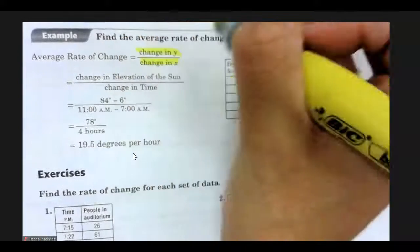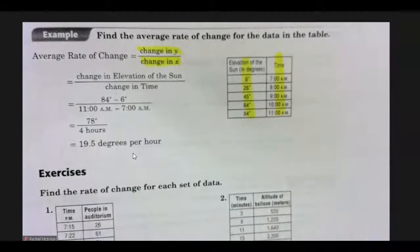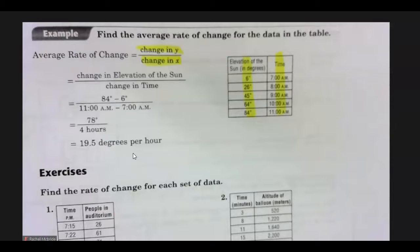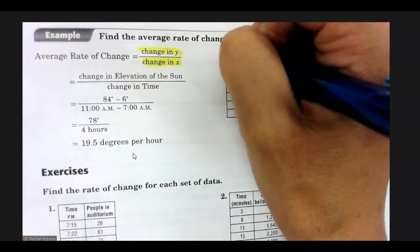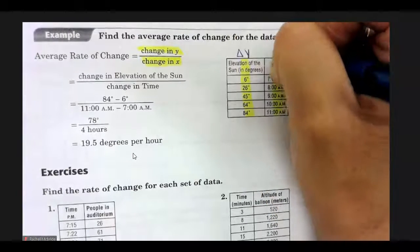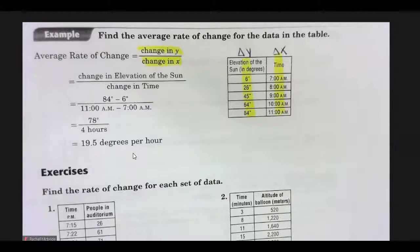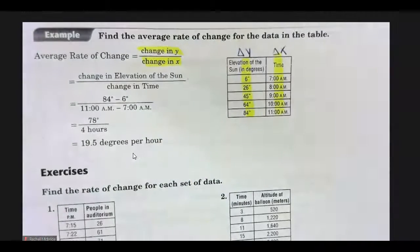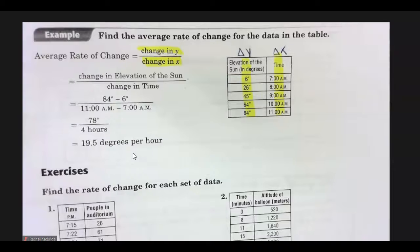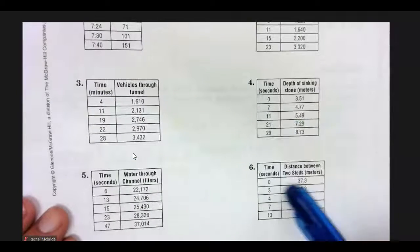So, the y is the change in a quantity. The x is always the change in a time. So, in this case, it says find the average rate of change for the data in the table. So, the y value is going to be the elevation and the time is our x because it's a change in quantity over a change in time. So, time will always be your denominator, regardless of how a table is set up.